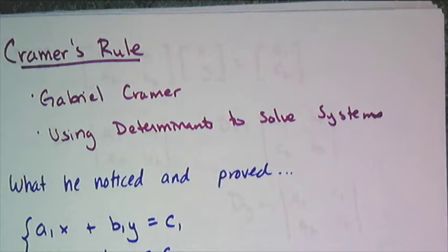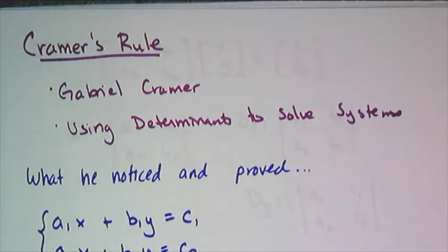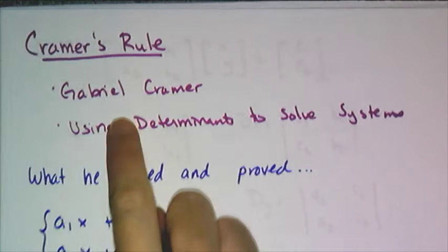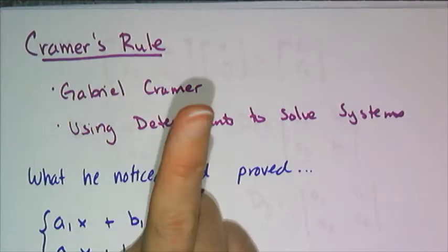Now I mentioned that the determinant will help you determine if a matrix has an inverse and if a system of equations is solvable, but this dude named Gabriel Cramer figured out something more.